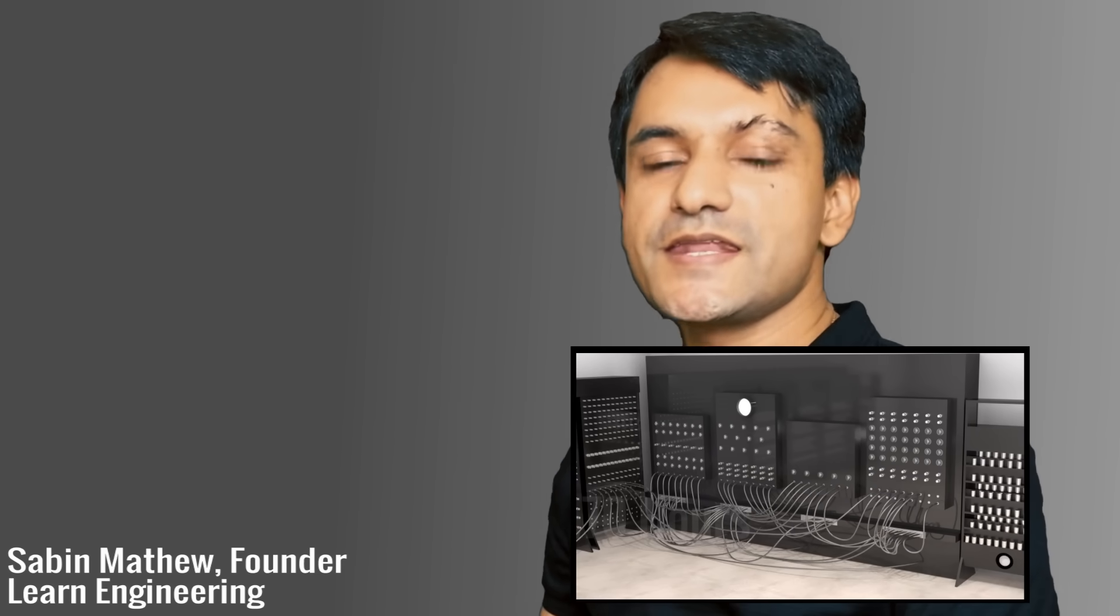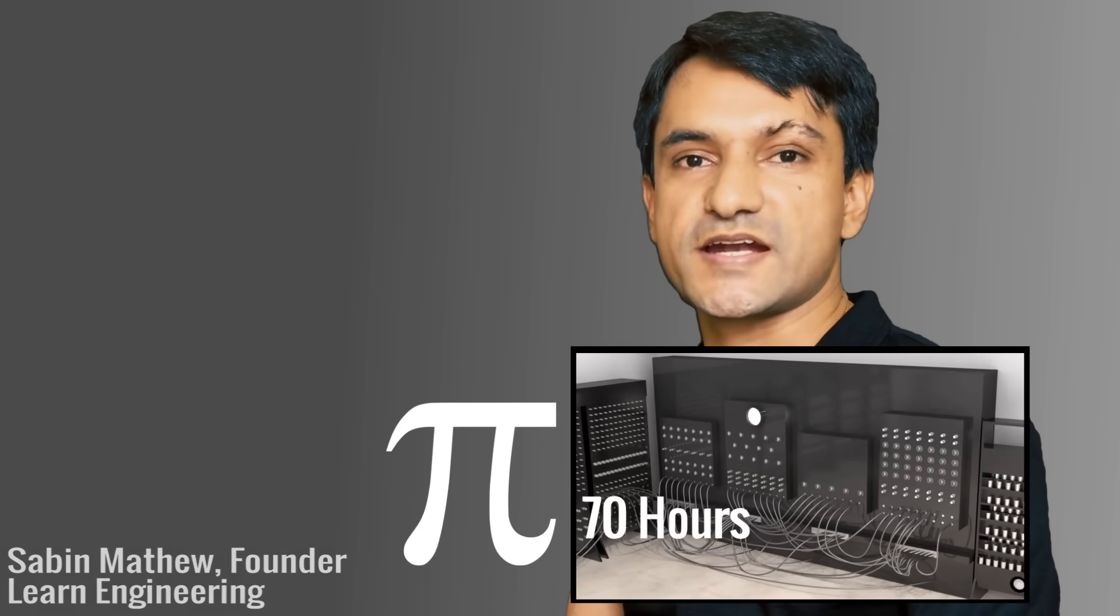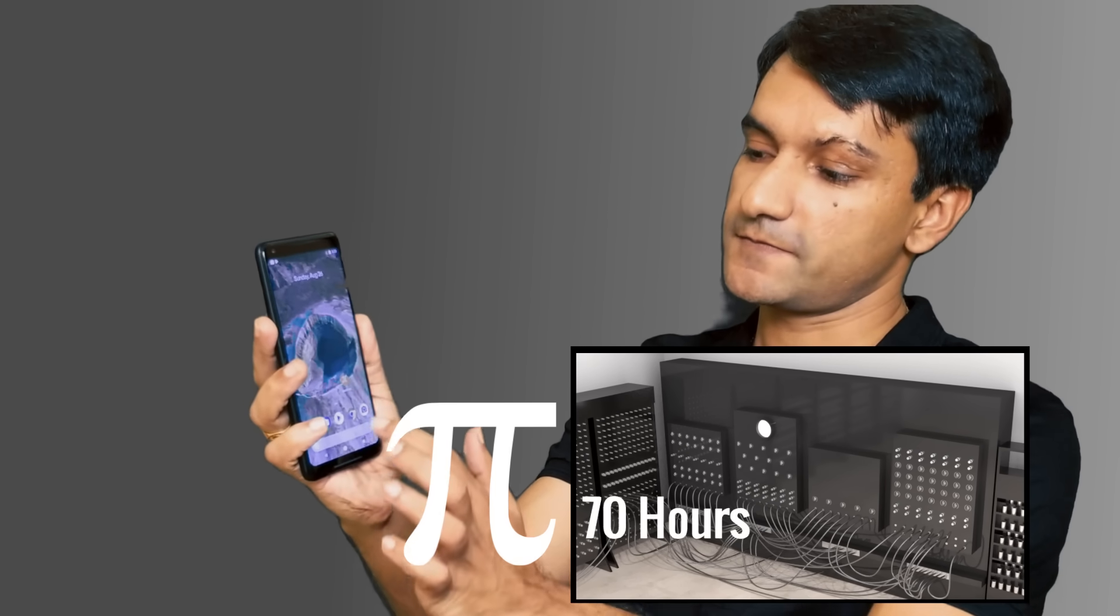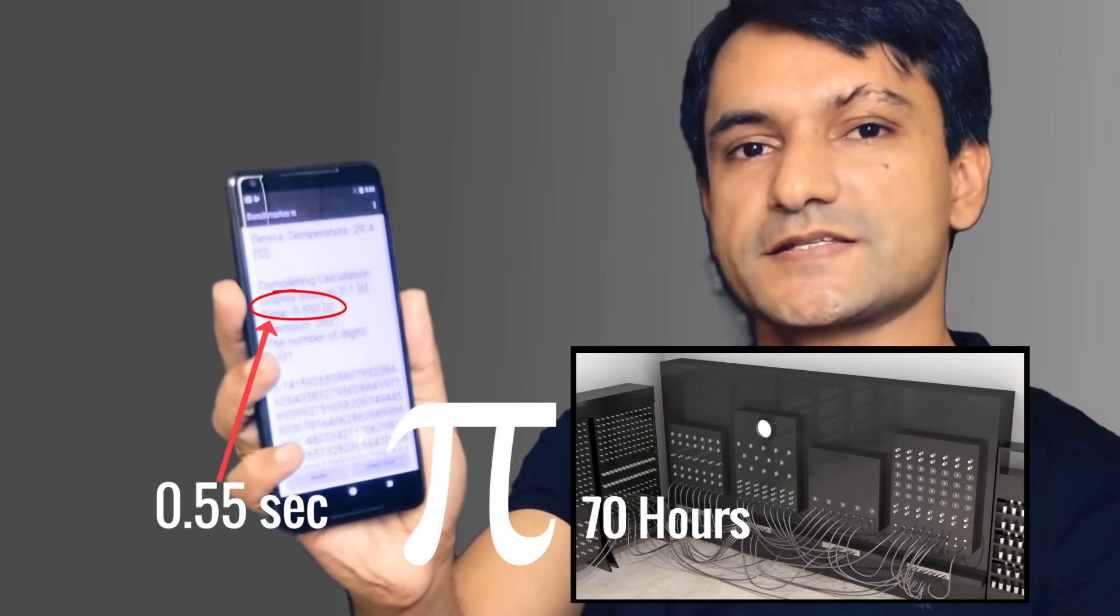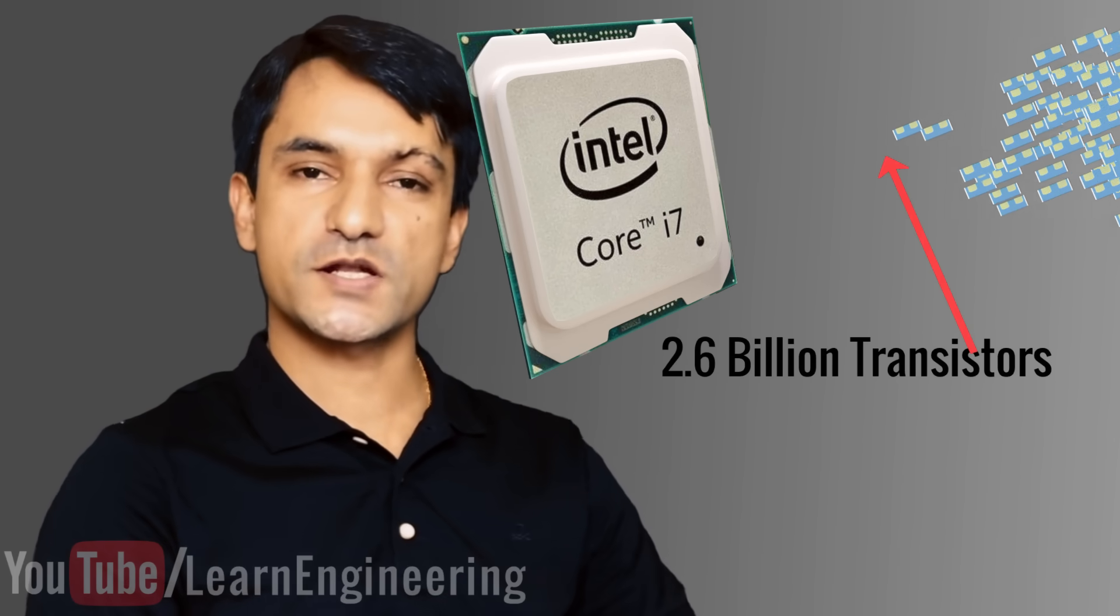In 1949, it took an early computer 70 hours to calculate the value of Pi up to 2031 digits. Now the smartphone in your hand can do the same task in 0.5 seconds. This miraculous growth in speed was made possible by a tiny device inside electronic gadgets called a transistor.